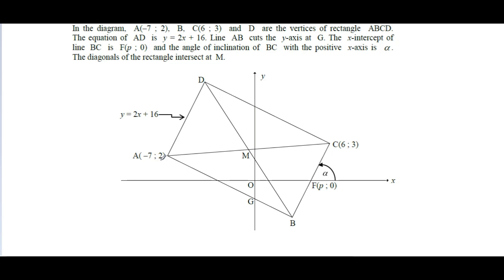We have point A with coordinates (-7, 2), which makes sense — the x value is negative and y is positive. They don't give us B, but based on its position relative to the axes, x should be positive and y should be negative. C is given as (6, 3). D is not given either — these are just the corners of our rectangle. The equation of line AD is y = 2x + 16, a straight line in the form y = mx + c, so 2 is our gradient and 16 is our y-intercept.